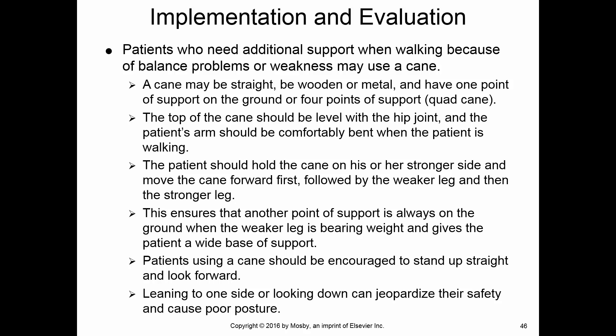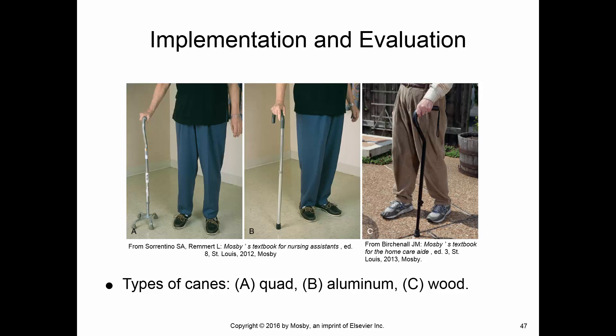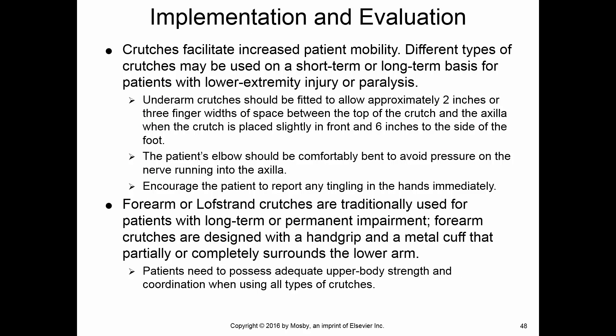Some patients only need a cane for assistance. The first type is a quad cane; the other pictures show regular canes — some are metal, some wood, with different handle shapes.